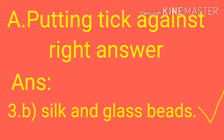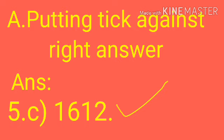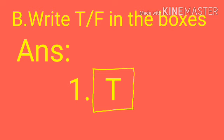Answer: Option B — silk and glass beads. Question 4: Shah Jahan became the emperor in dash. Answer: Option B — 1628. Question 5: Khurram married Arjumand Banu Begum in dash. Answer: Option C — 1612. B: Write T for True and F for False for the statements given in the boxes below.